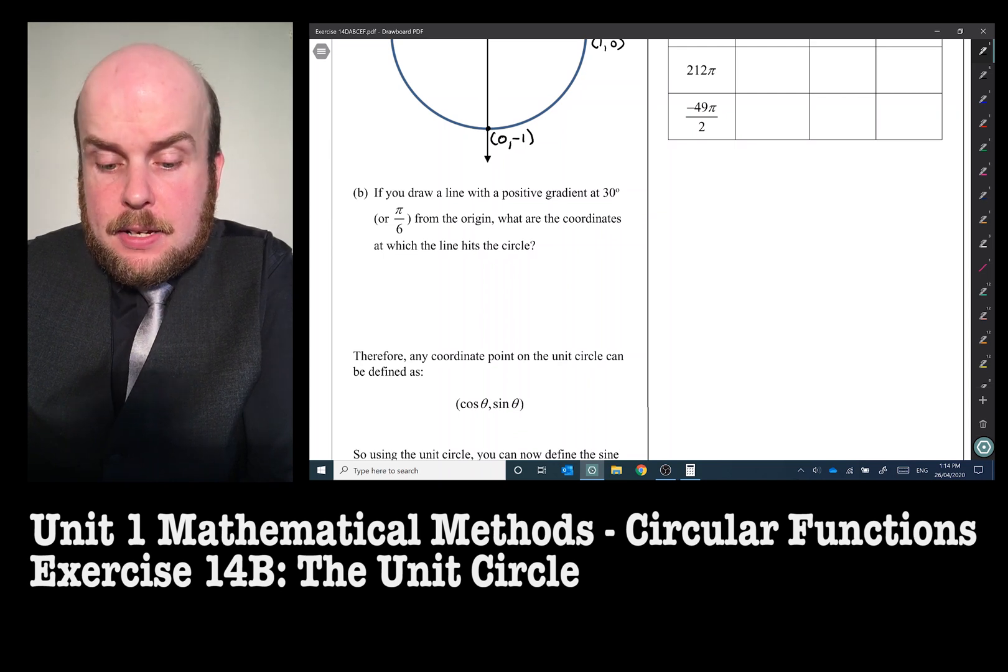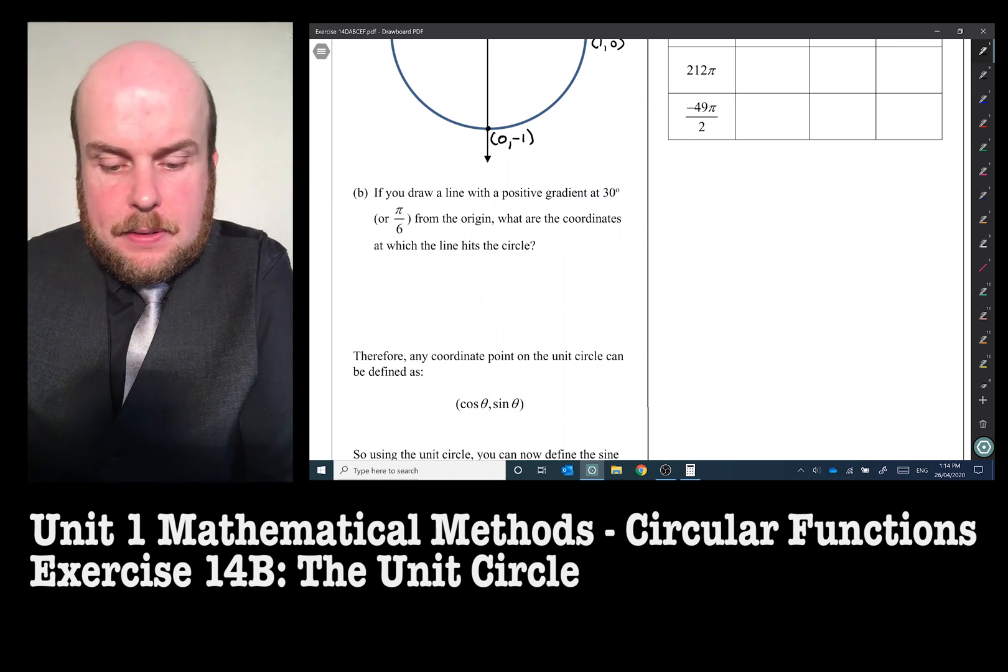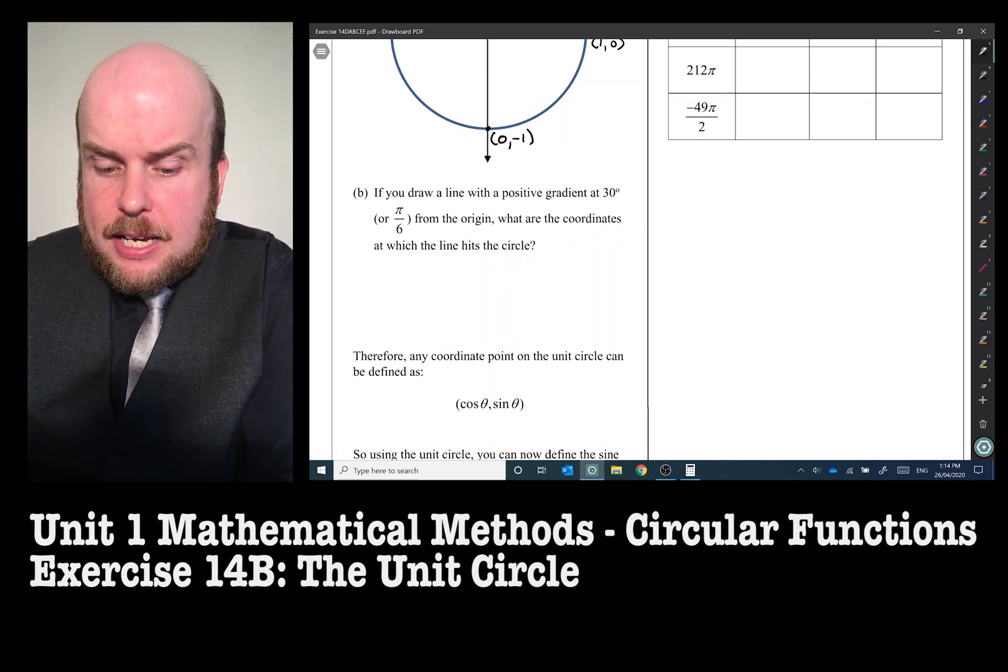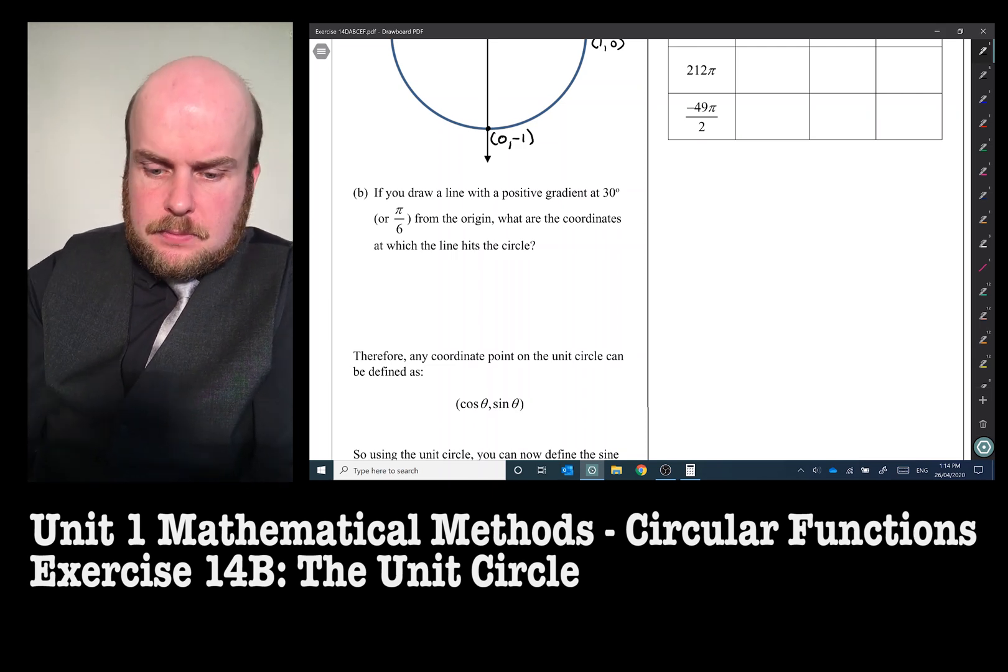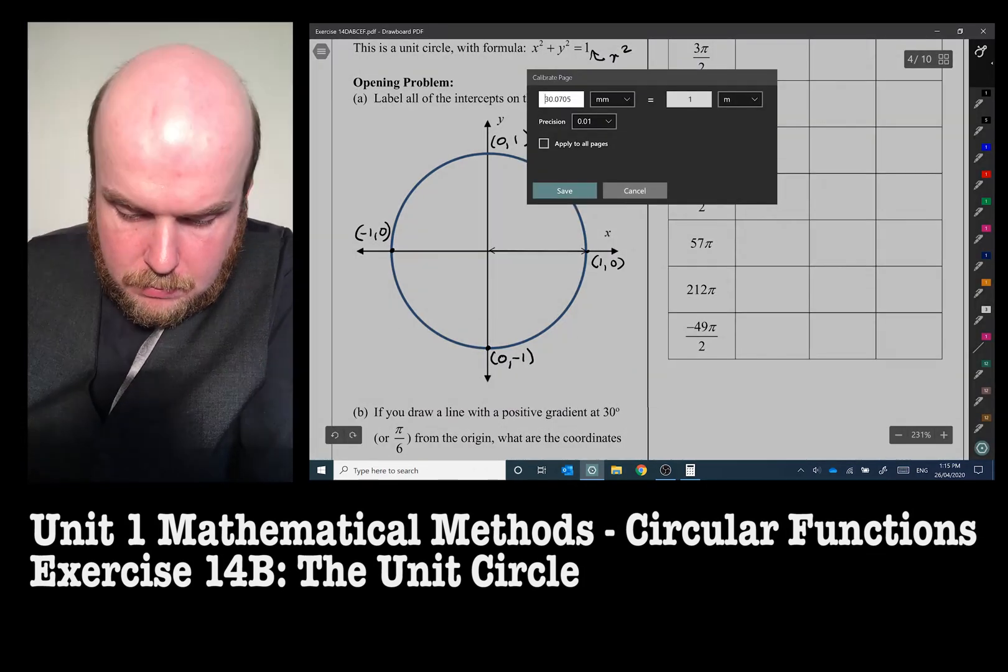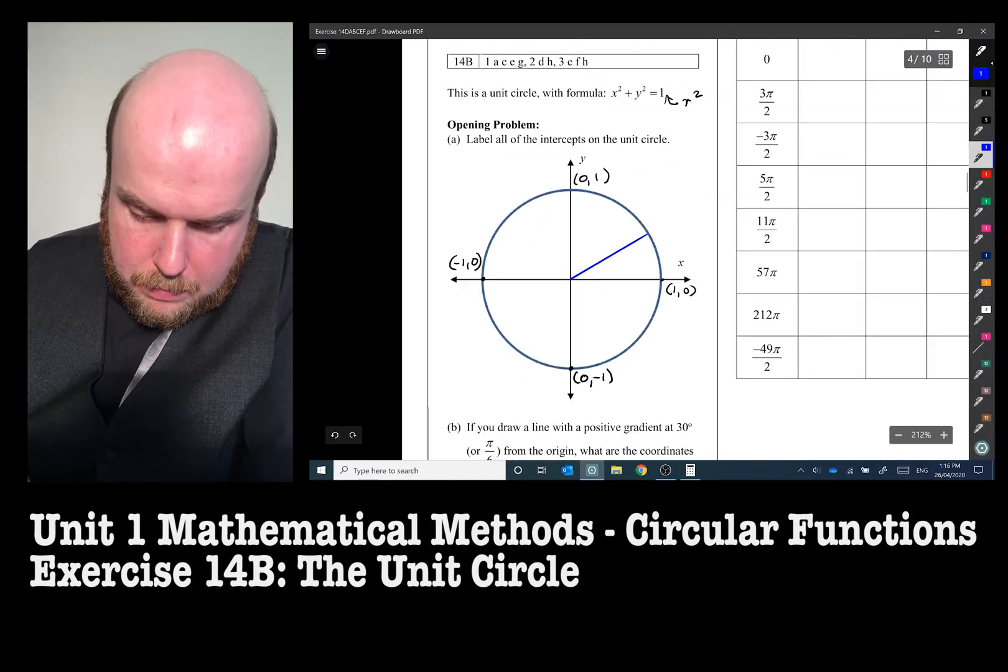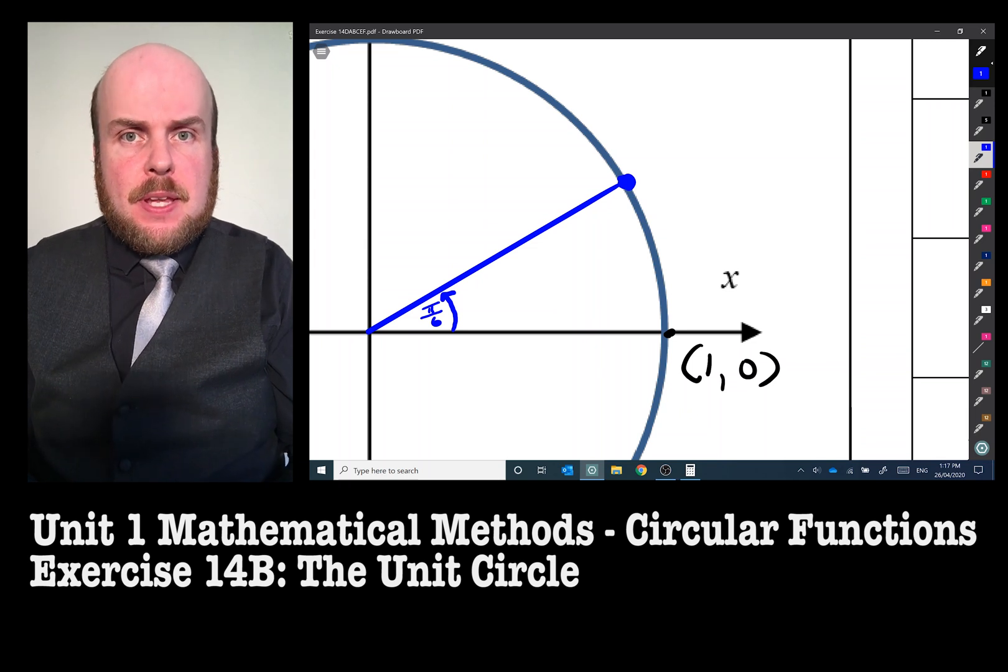If you draw a line with a positive gradient at 30 degrees, or pi on 6, from the origin, what are the coordinates at which the line hits the circle? We better get our protractor and a ruler out. So I've drawn my line, and it's hit the circle there, with an angle of pi on 6.